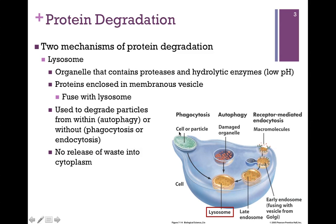We might also take up a cell or particle by phagocytosis, encased in a vesicle, and fused with the lysosome for degradation. Or we might take one up by receptor-mediated endocytosis — it's encased in a vesicle, fused with the lysosome, and degraded. The benefit here is that the waste products are contained within the lysosome vesicle, not released into the cytoplasm where they might damage the cell, and then the lysosome can release its contents to the outside of the cell.